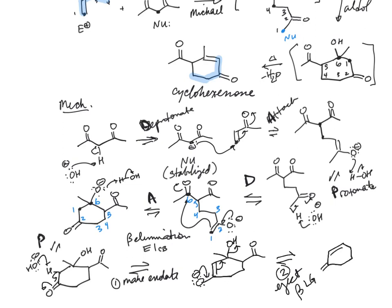And we get our cyclohexenone product. So when we see a target molecule with a cyclohexenone pattern — a pattern of functional groups — then the Robinson annulation is a reaction we can consider for its synthesis.